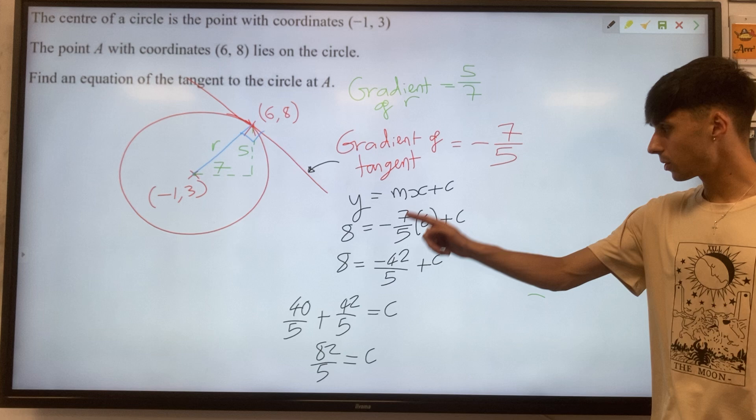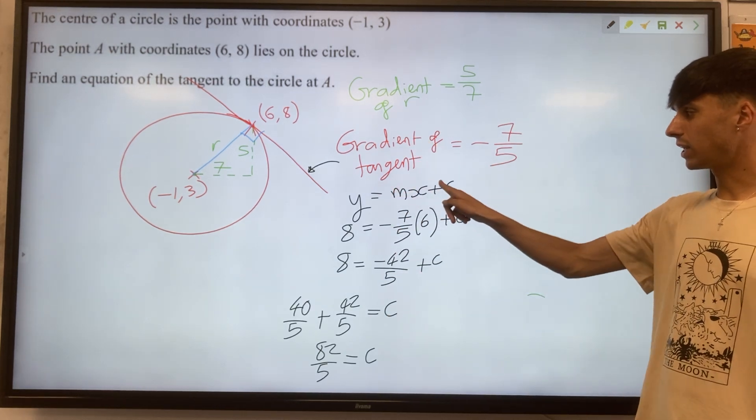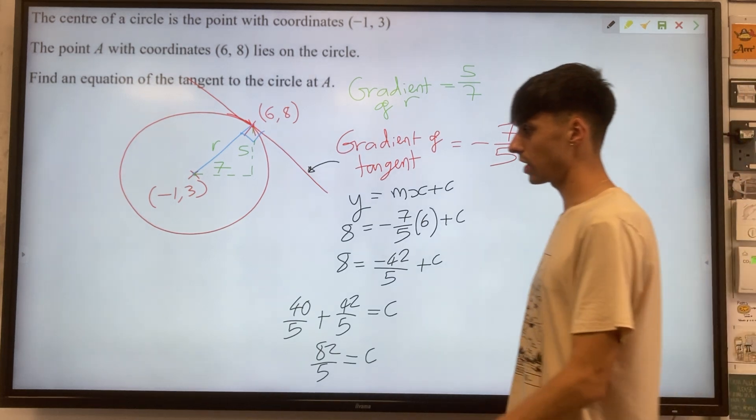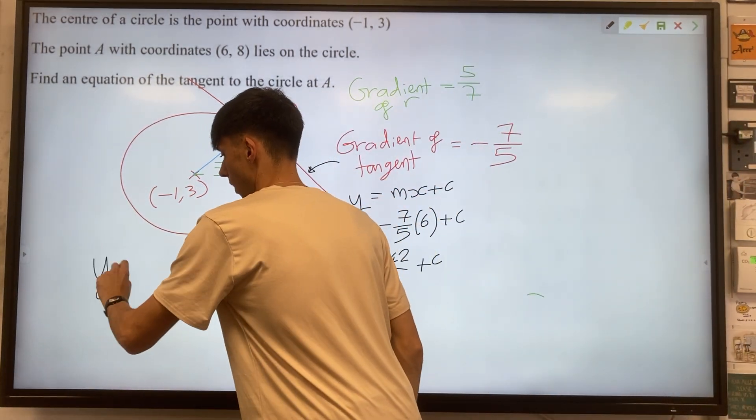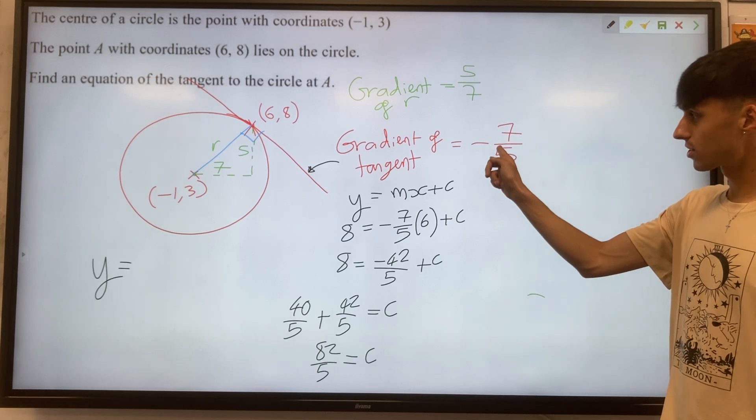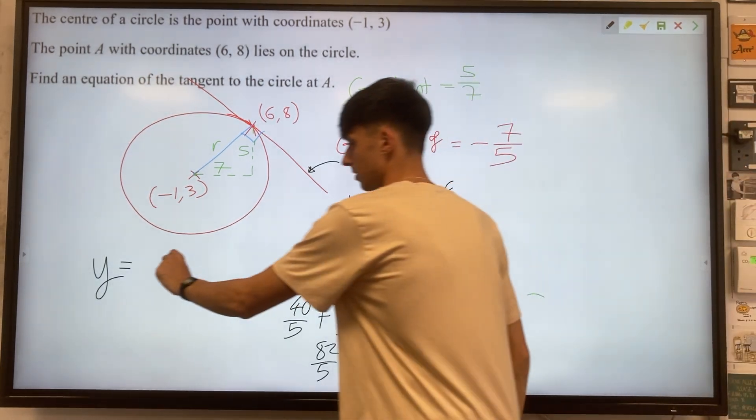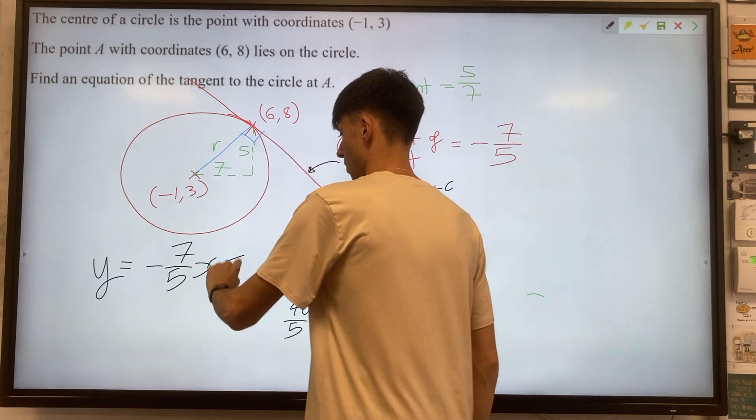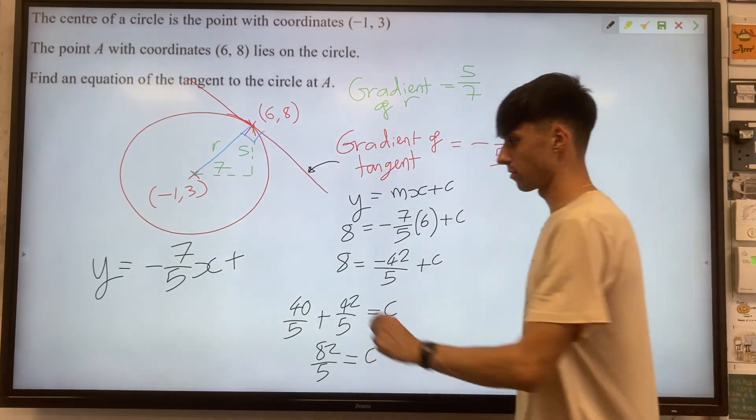Lastly, then we can put that c back into our y equals mx plus c. And that's going to give us the equation y equals minus 7 over 5x, that was our gradient, plus 82 over 5.